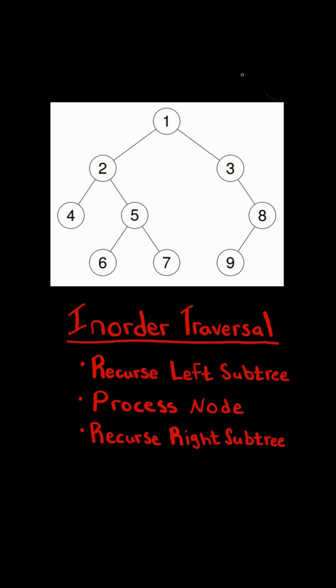In an in-order traversal, we first recurse on the left subtree, then we process the node, and finally recurse on the right subtree.